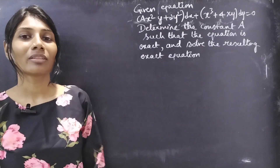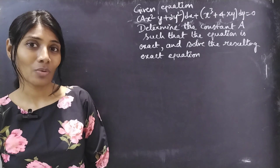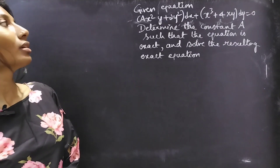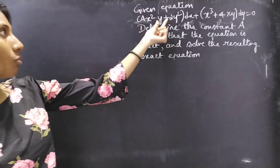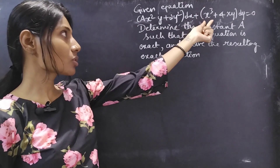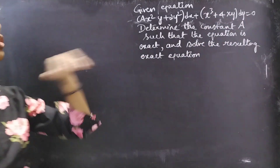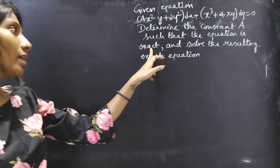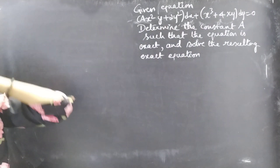Hello everyone, this is Jay Kalpana here. In this video we are going to see a problem from differential equations. The given differential equation is (ax²y + 2y²)dx + (x³ + 4xy)dy = 0. We need to determine the constant 'a' such that the equation is exact, and then solve the resulting exact equation.